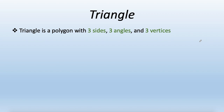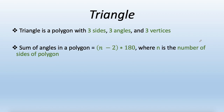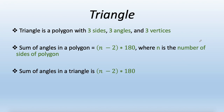So what exactly is a triangle? A triangle is a polygon with three sides, three angles, and three vertices. The sum of angles in a polygon is equal to (n minus 2) times 180, where n is the number of sides. For a triangle, n equals three, so the total sum of angles in a triangle is 180 degrees.